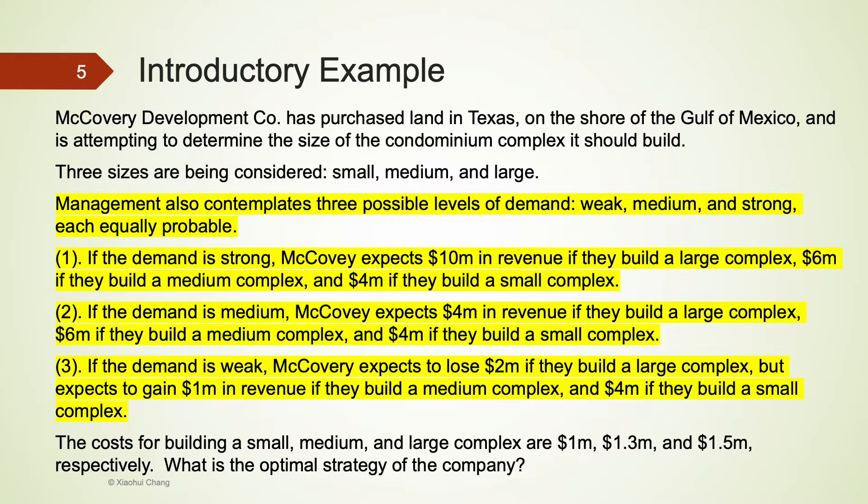So the optimal strategy depends on the market condition, which is a future event and is unknown when the company makes a decision. This type of problem is known as decision making under uncertainty.